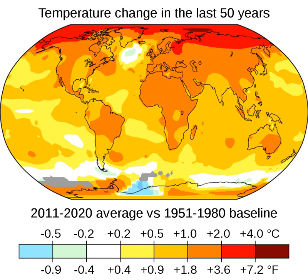Climate change impacts on the environment include: ecological collapse (bleaching has damaged the Great Barrier Reef and threatens reefs worldwide), extreme weather (drought and high temperatures worsened the 2020 bushfires in Australia), Arctic warming (permafrost thaws undermine infrastructure and release methane, a greenhouse gas), habitat destruction (many Arctic animals rely on sea ice, which has been disappearing), and pest propagation (mild winters allow more pine beetles to survive to kill large swathes of forest).